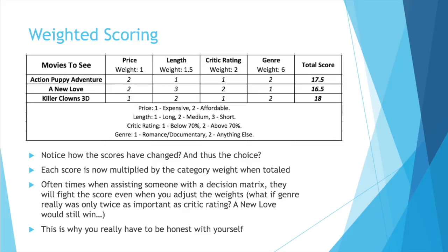People may fight the answer of the matrix either way. If you're doing it for yourself, it's important to be honest. Deep down, do you really want to see Killer Clowns 3D? If you do, then this weighted matrix makes sense. If you really don't care, then the original matrix is telling you that A New Love is the best choice for you. So you have to be honest.